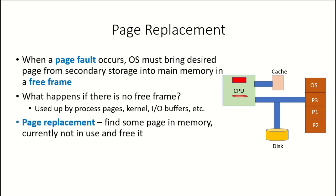If the processor requests a particular page and that page is not available in the main memory or physical memory, there will be a page fault. When this page fault occurs, the operating system must bring the desired page from secondary storage into main memory. When this page has to be brought into main memory, a frame should be available so that this page can be loaded there.